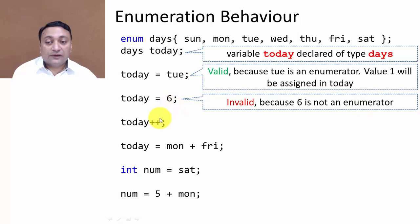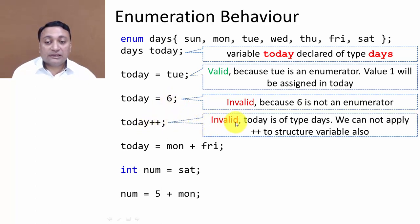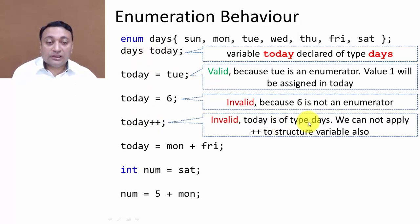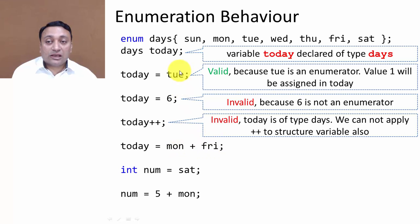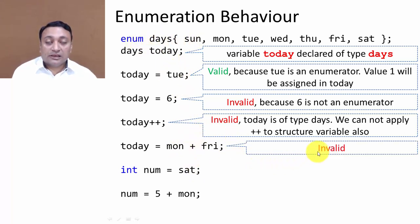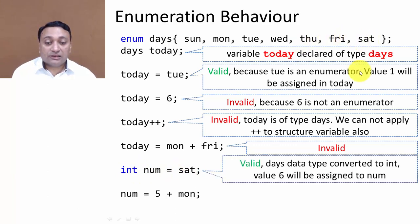Performing '++' on 'today' is also invalid because 'today' is of type 'days', not integer or float or double. You cannot apply increment to an enumeration variable, just as you cannot apply it to a structure variable. Similarly, adding two enumeration values like 'monday + friday' is also invalid.